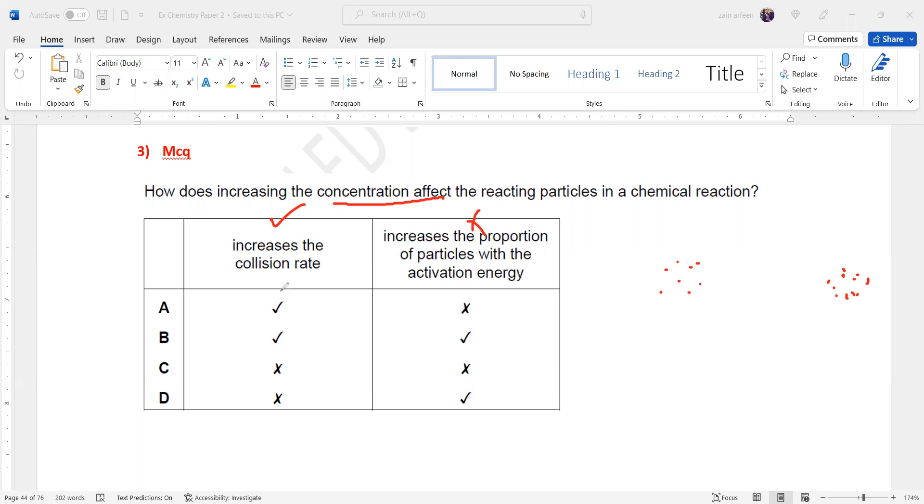Concentrated means more reactant particles are there, so they will have more collisions. So with reference to that, number of collisions will change. But the proportion of the particles with activation energy will remain the same. This proportion can vary only if we are changing the temperature or we are using a catalyst.